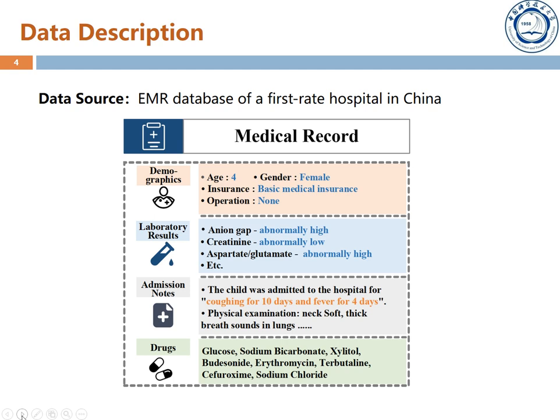The EMR dataset used in this paper comes from the electronic medical record database of a first-rate hospital in China. Each medical record contains the following information: demographics, which are formatted data including basic patient information such as patient's gender, age, type of medical insurance, etc. Laboratory results are the patient's test values and normal values for some laboratory items. Admission notes are part of a medical record that documents the patient's status including physical examination findings and the initial instructions for the patient's care. And finally, the drugs that include all of the drugs used during the patient's hospital stay.